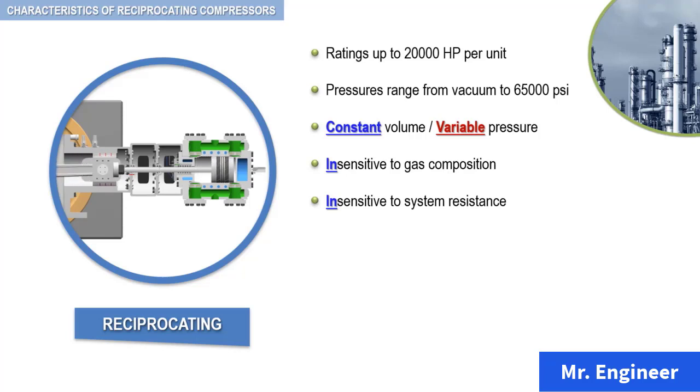For most applications, reciprocating compressors are the most efficient built today. They can be fitted with capacity control devices to closely maintain their efficiency at partial loads. They can be built to handle almost any commercial gas, provided corrosion problems in some extreme cases can be solved.